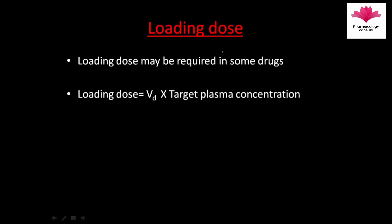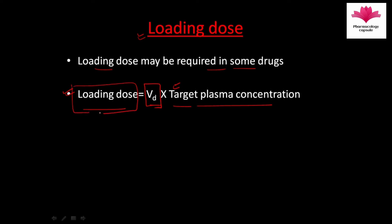Now we will study loading dose. A loading dose may be required for some drugs, and it mainly depends upon the volume of distribution. The formula for loading dose is: volume of distribution multiplied by target plasma concentration. Sometimes we have to rapidly attain the target plasma concentration, so a high dose is given at the beginning of treatment, which is known as the loading dose.